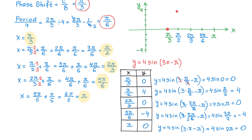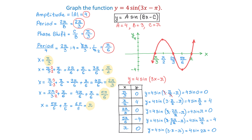Now I will plot the rest of the points: 2 pi over 3 with y equals 0, then 5 pi over 6 with y equals negative 4, then pi with y equals 0. We then connect the points to get the graph. So here we have the graph of the function y equals 4 sine of 3x minus pi. I hope you liked the explanation. Please subscribe, leave a comment, and thank you for watching.